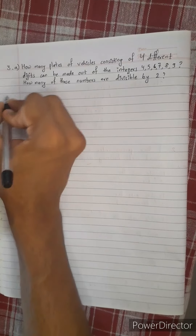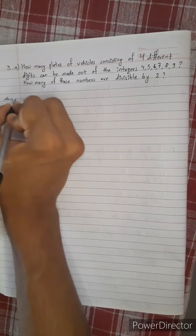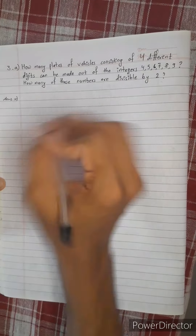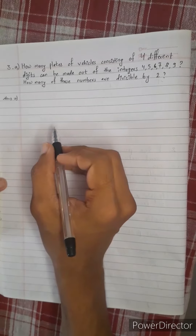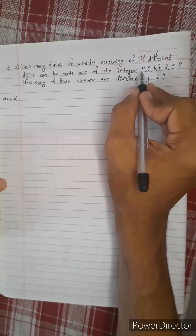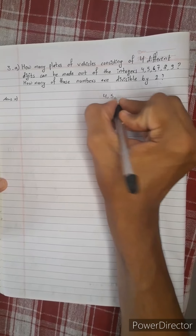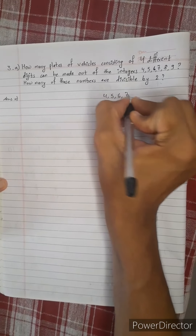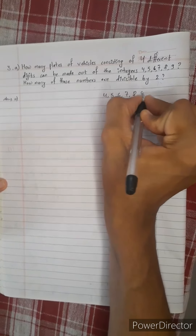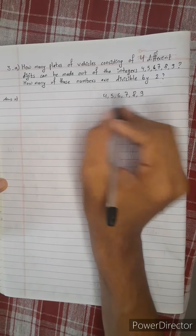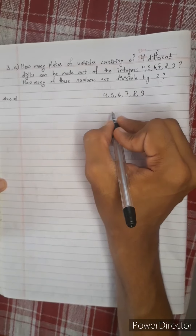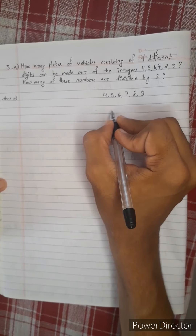This is simple. What are the numbers? The numbers are 4, 5, 6, 7, 8, 9. The number is 5 digits.